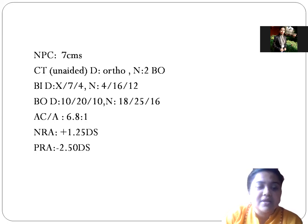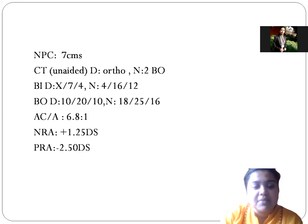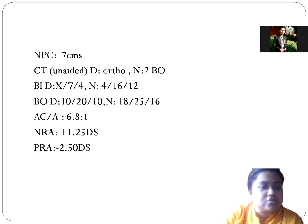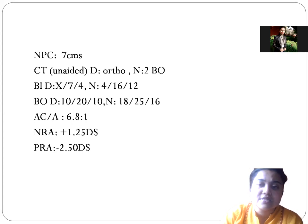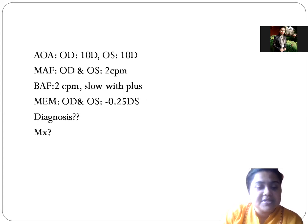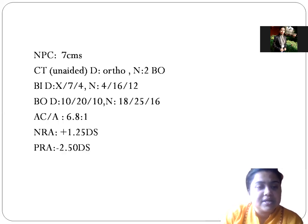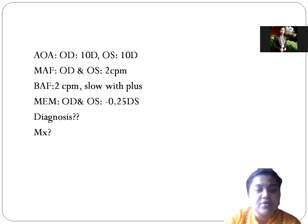The NRA value is very low — it is plus 1.25, while the normative value is plus 2.50. PRA value is quite normal at minus 2.50. But base-out for distance and near is quite higher. NPC is normal at 7 centimeters. Now, looking at the amplitude of accommodation — it is 10 diopters in both eyes.